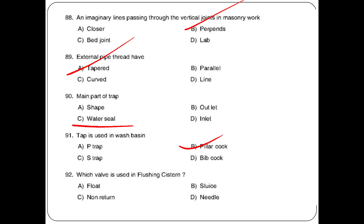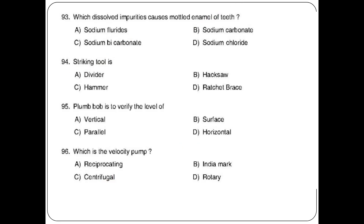Which valve is used in a flush cistern? Dissolved impurities that cause molting of enamel of teeth — options: sodium fluoride, sodium carbonate, sodium bicarbonate, sodium chloride. The answer is sodium fluoride. Striking tool — options: divider, hacksaw, hammer, ratchet. The answer is hammer. Plumb bob is used to verify the vertical surface.